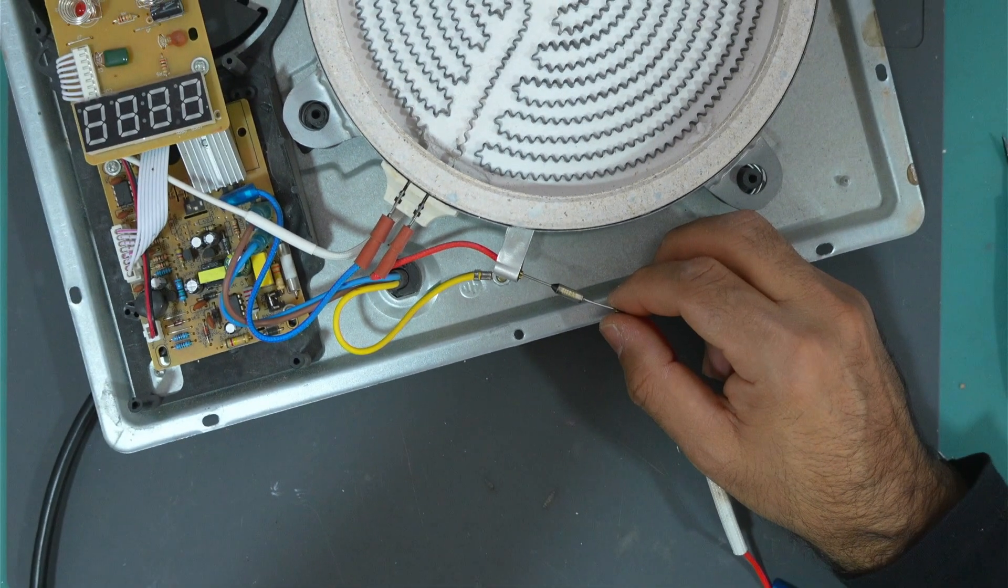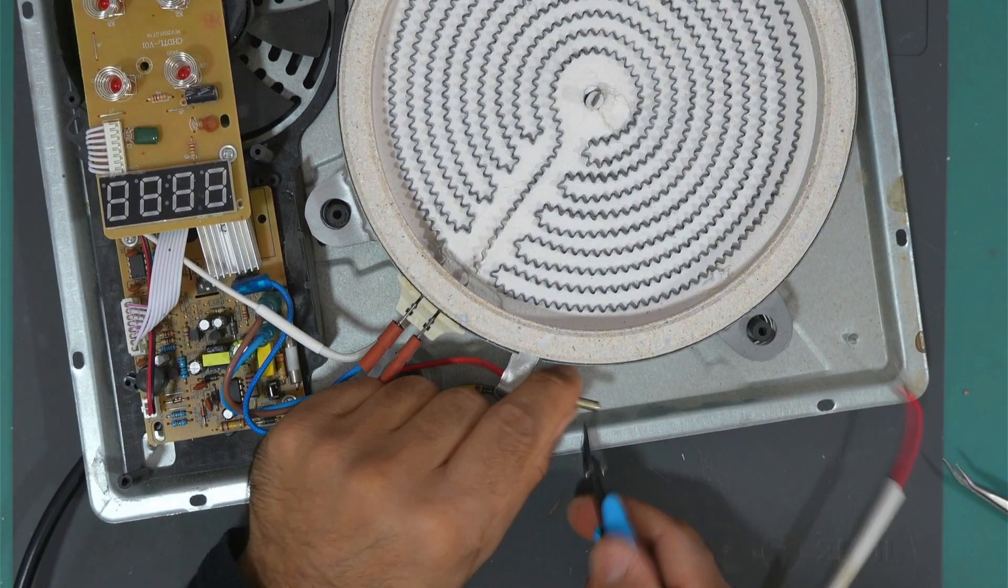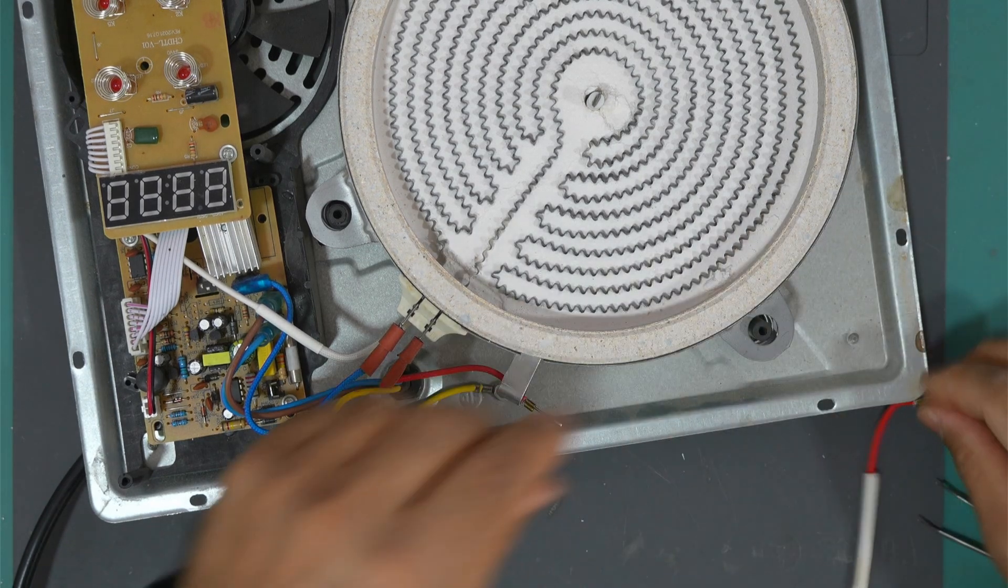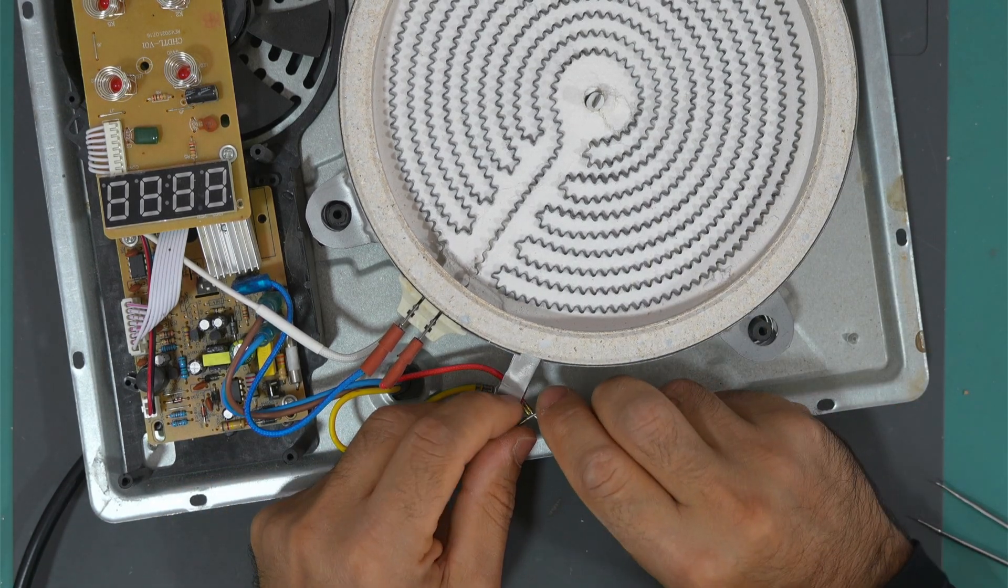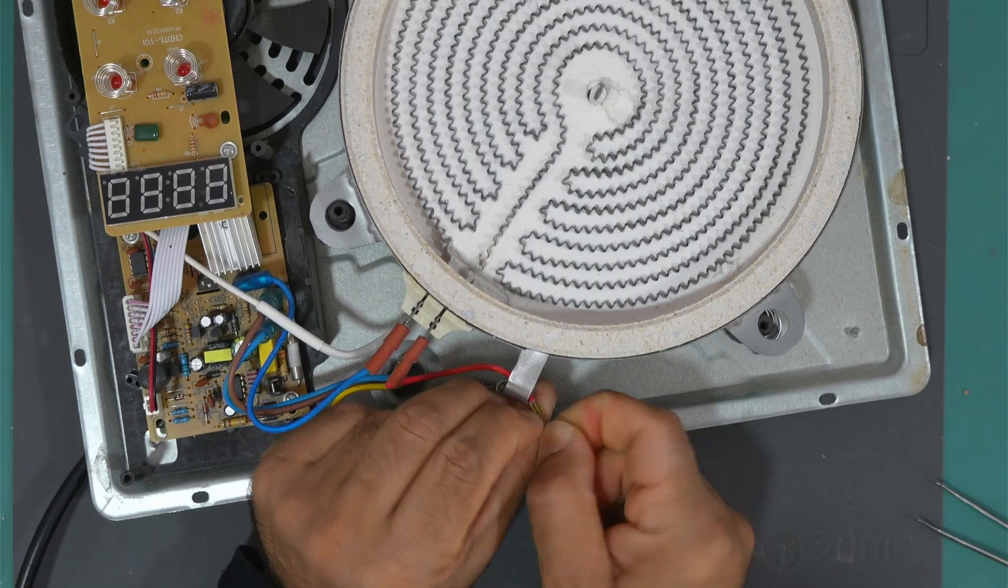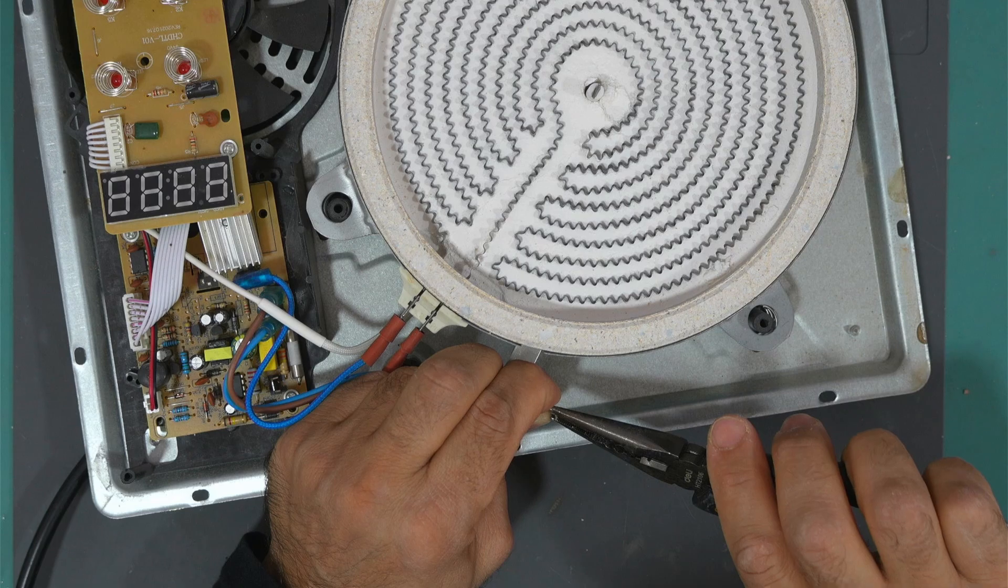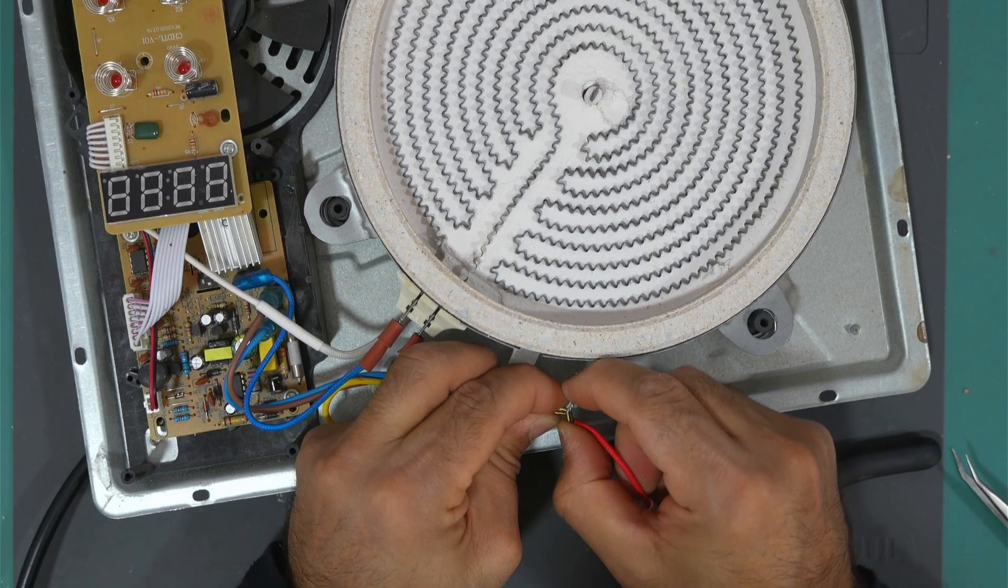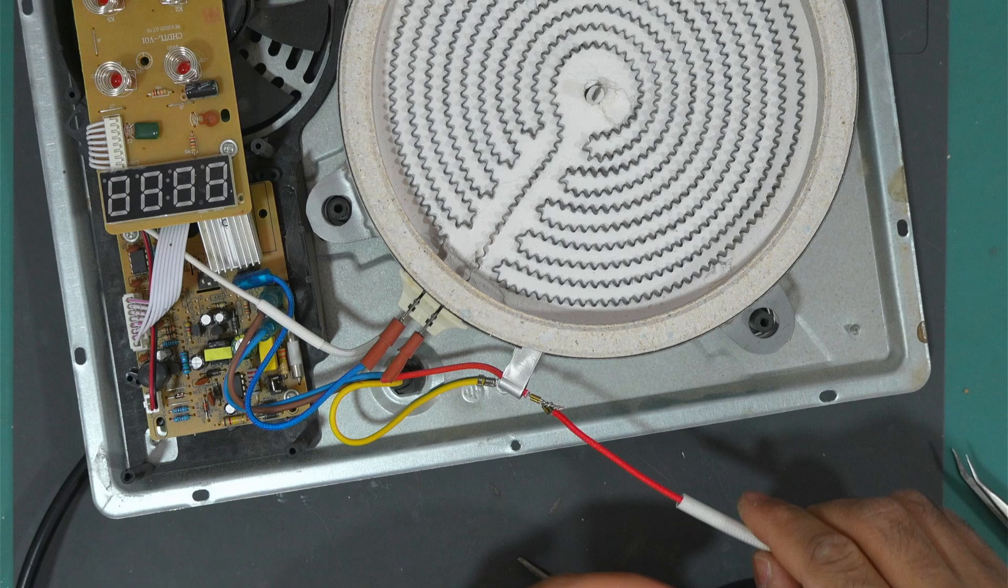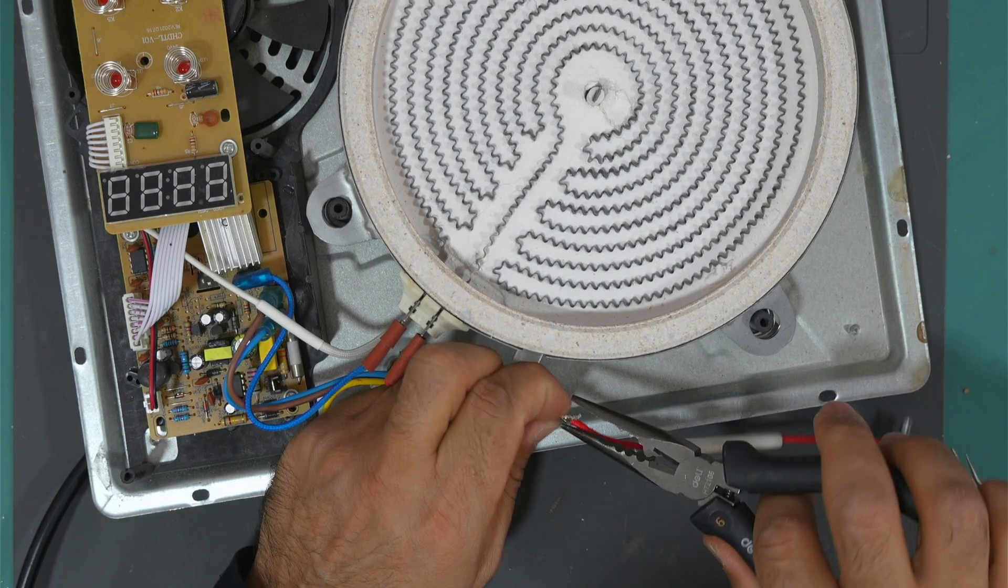For now, I will just cut the fuse. I will twist these wires together and I will leave it like that till I order another fuse and install it.